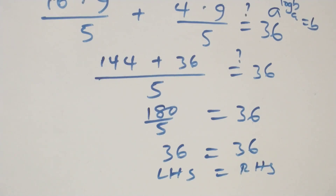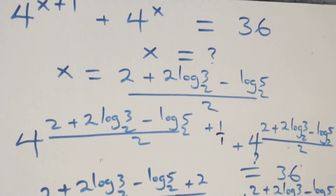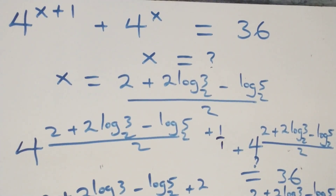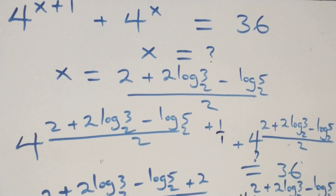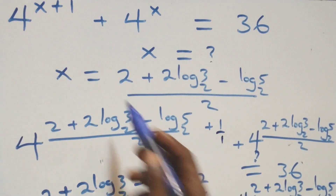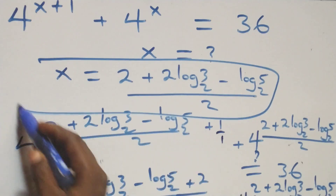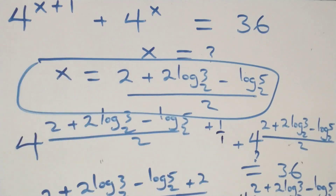We conclude that x equals 2 plus 2 log₂3 minus log₂5, all over 2, satisfies the given problem. Thank you for watching — don't forget to subscribe for more videos, share with a thumbs up, and put your comments below. See you in the next class, bye for now.